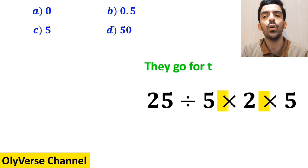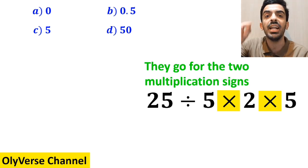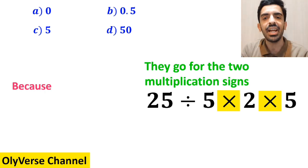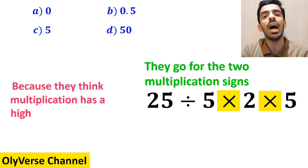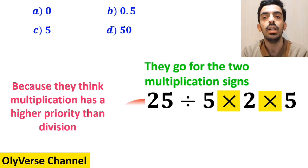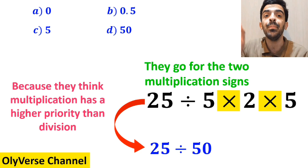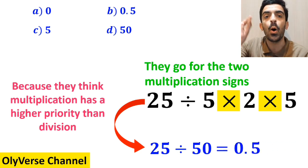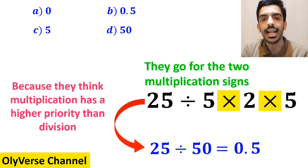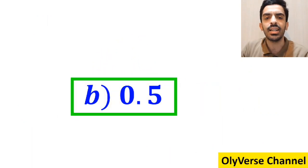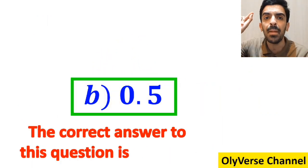And the next step they go for the two multiplication signs that I've highlighted in yellow, because they think multiplication has a higher priority than division. So instead of this expression they write 25 divided by 50, which finally gives the answer 0.5. And immediately they conclude that the correct answer to this question is option B.